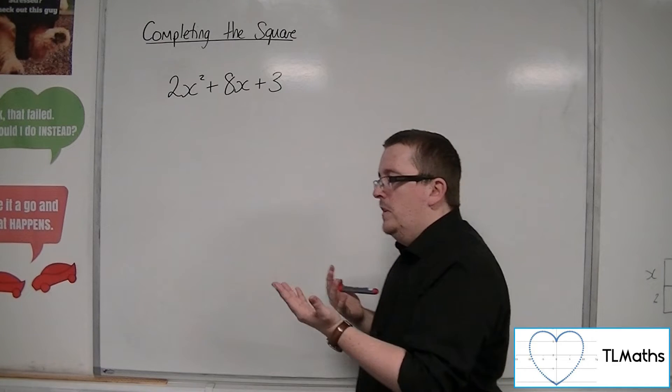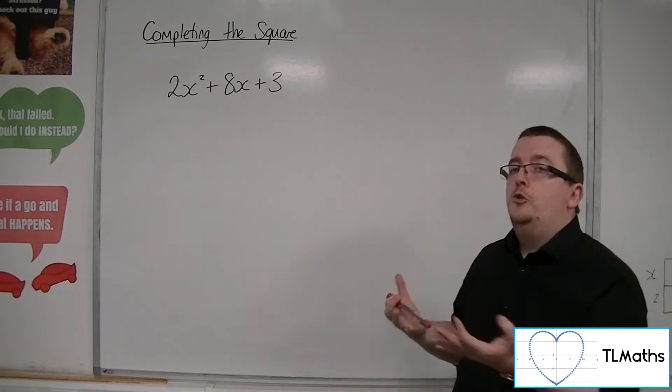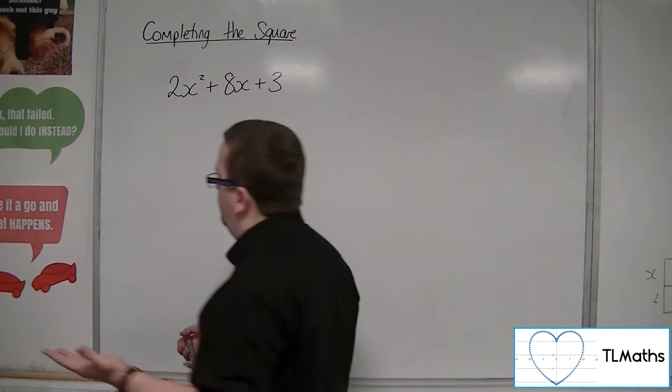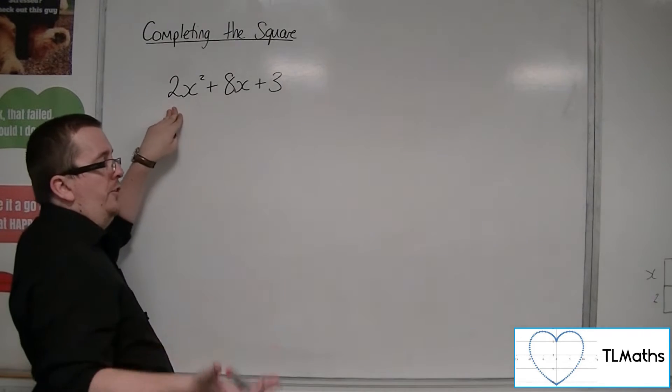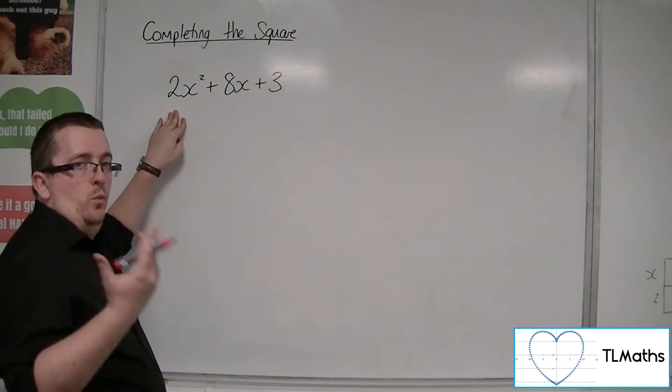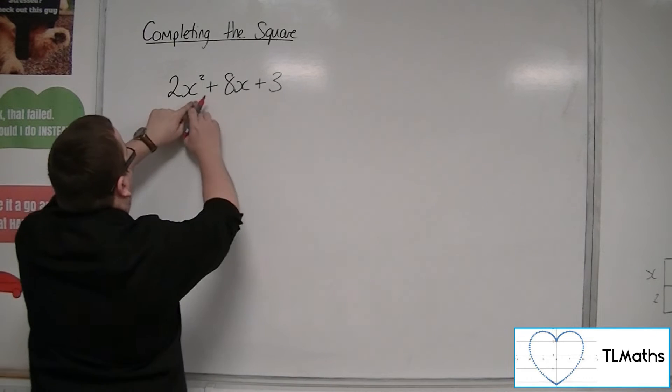It's mainly a damage limitation to make sure that I don't have to deal with too many fractions. So whatever that number is, be it 3, minus 4, 100, whatever, I will factor that number out of the first 2 terms.